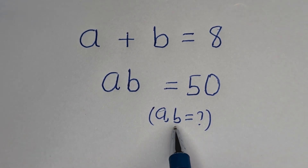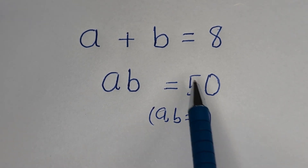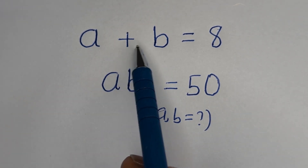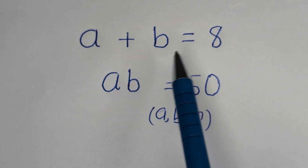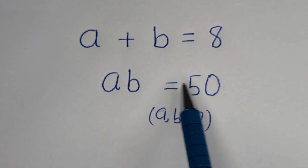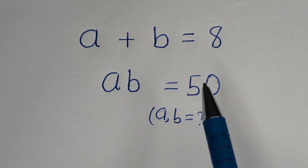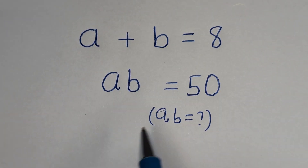Hello, how to solve for A and B in this equation: A plus B is equal to 8, and A times B is equal to 50. Solution.